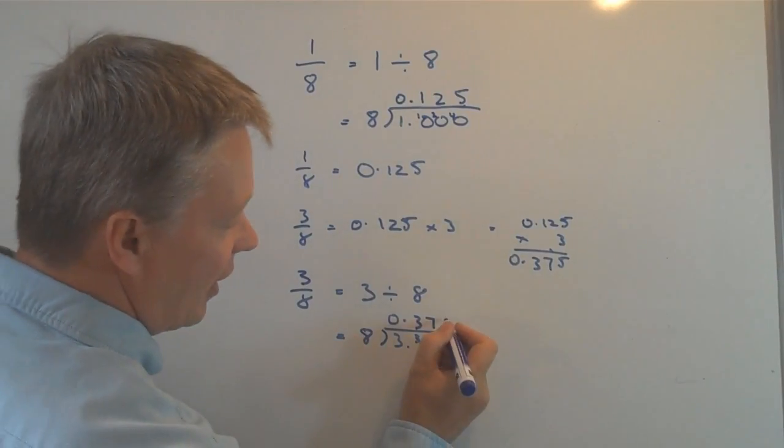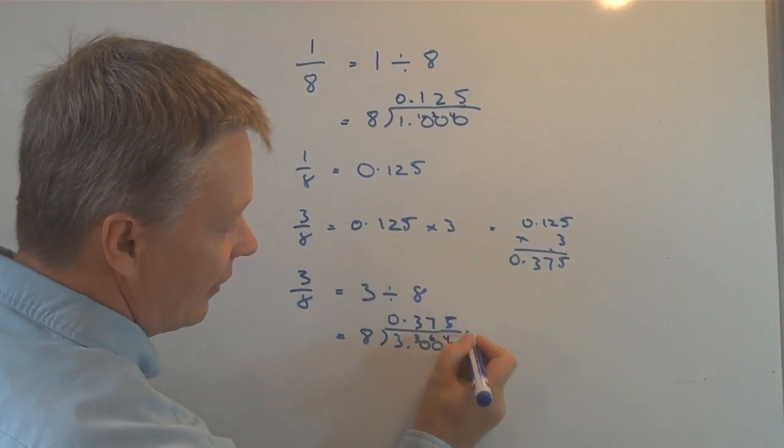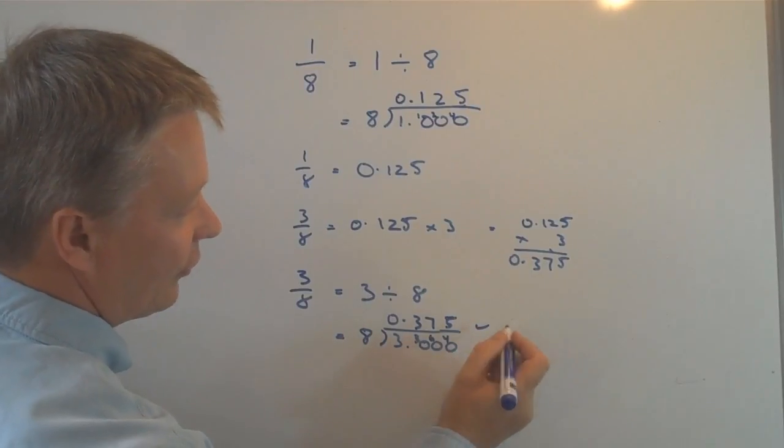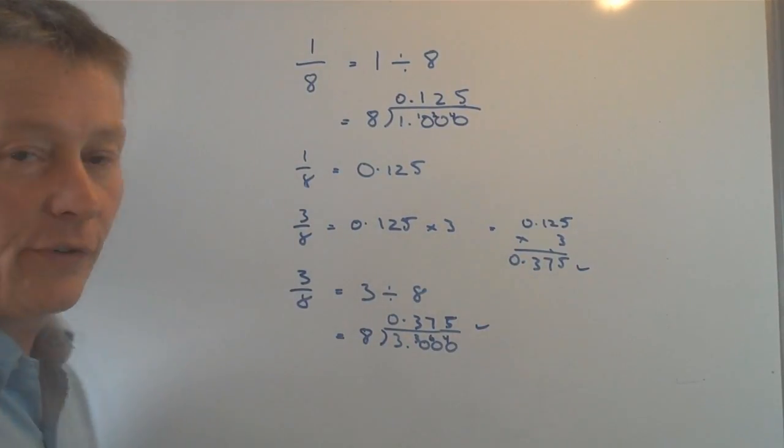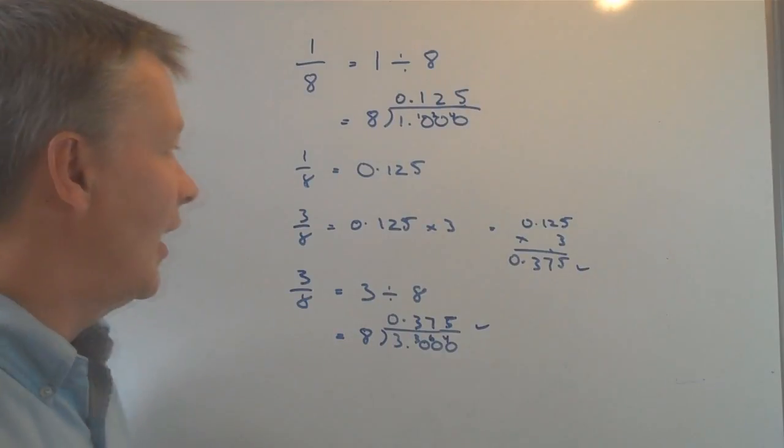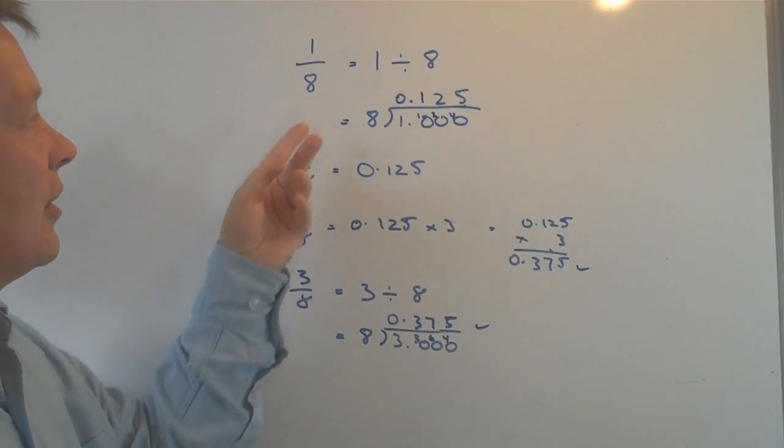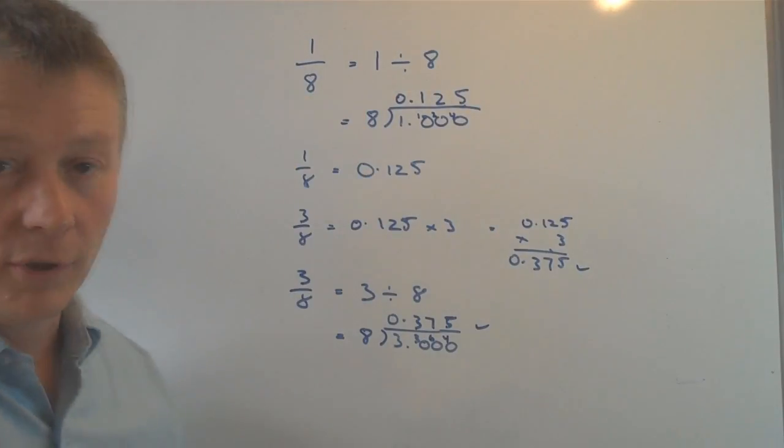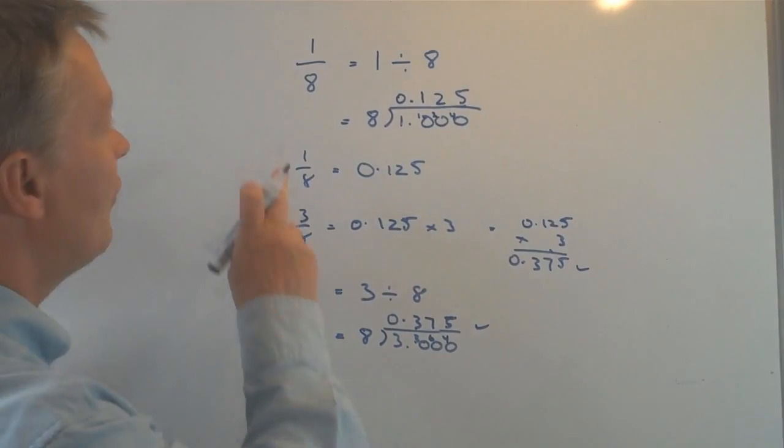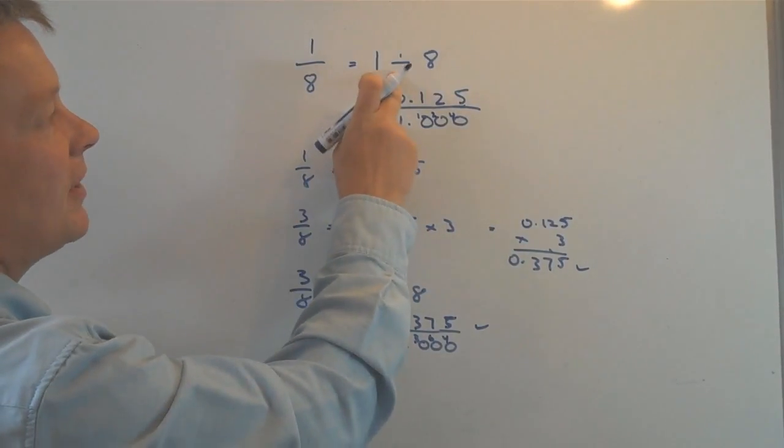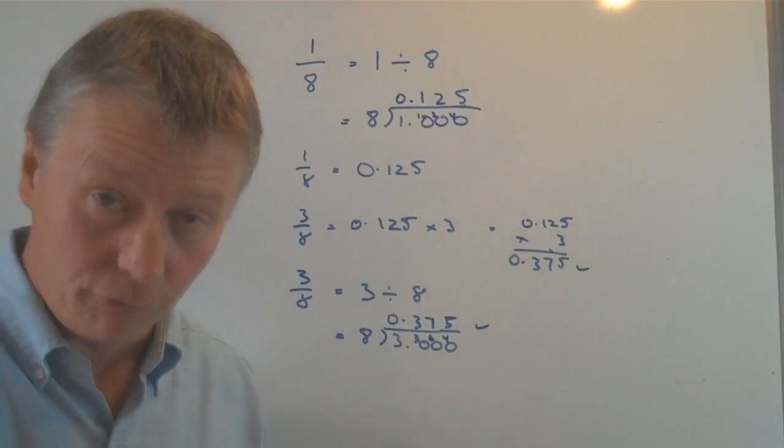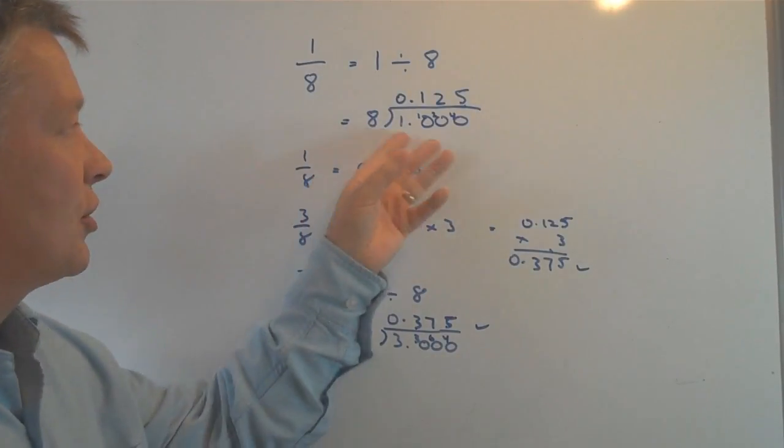Eight into forty goes five. Okay, 0.375, or 0.375. So, in other words, to calculate from a fraction to a decimal, I need to recognize that this line really means division, and then I can rewrite it as a short division.